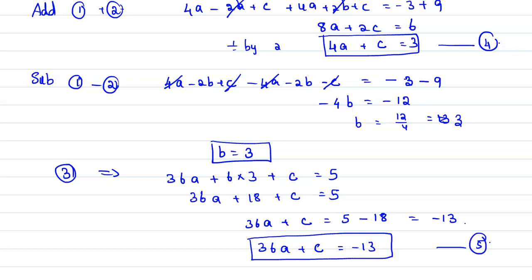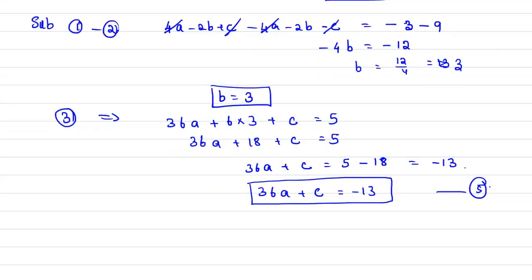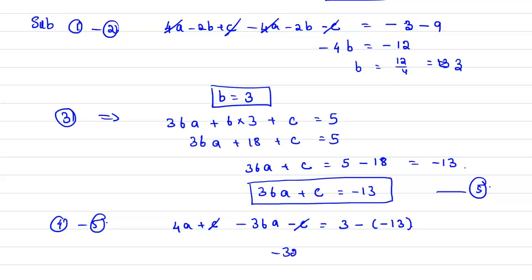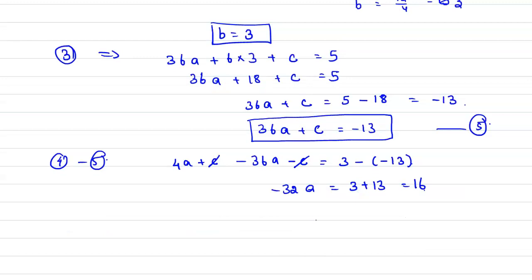Subtract equation 5 from equation 4: (4a + c) - (36a + c) = 3 - (-13). The c terms cancel and 4 - 36 gives -32a = 16, so a = -16/32 = -1/2.